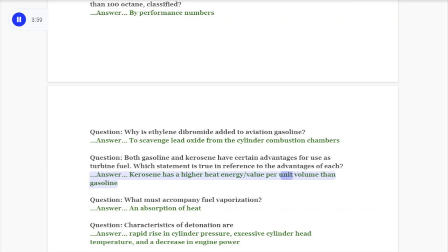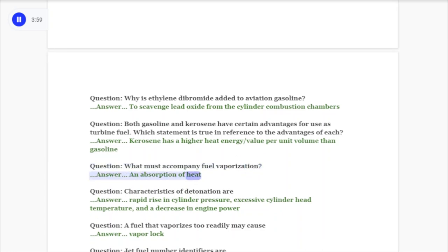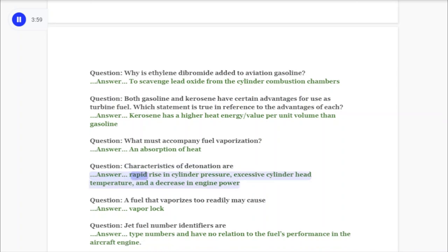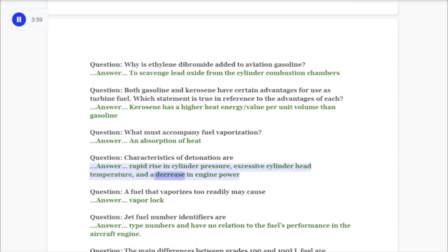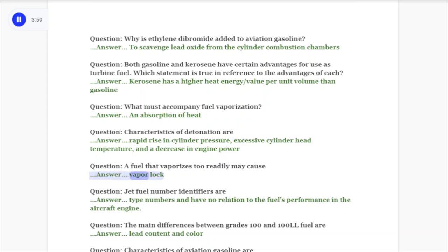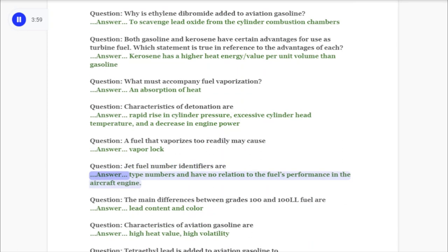Question: What must accompany fuel vaporization? Answer: An absorption of heat. Question: Characteristics of detonation are? Answer: Rapid rise in cylinder pressure, excessive cylinder head temperature, and a decrease in engine power. Question: A fuel that vaporizes too readily may cause? Answer: Vapor lock.